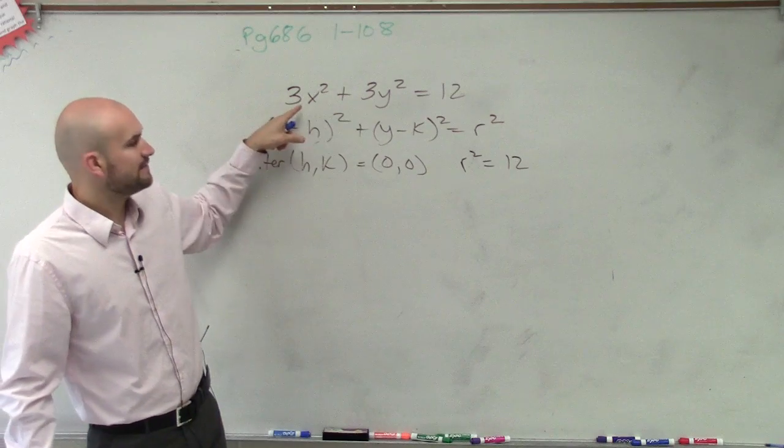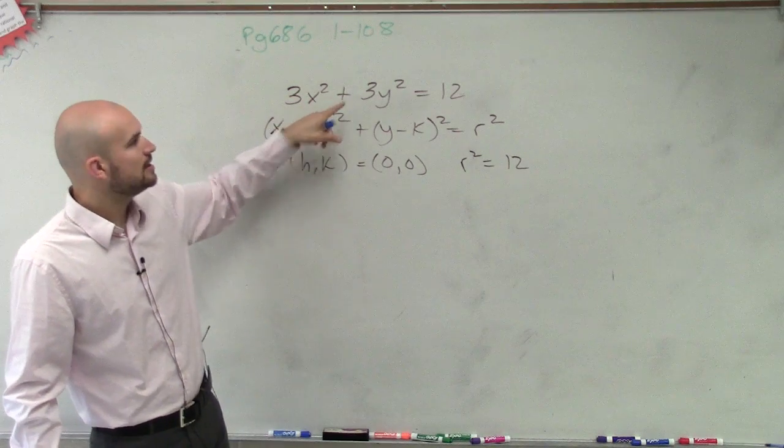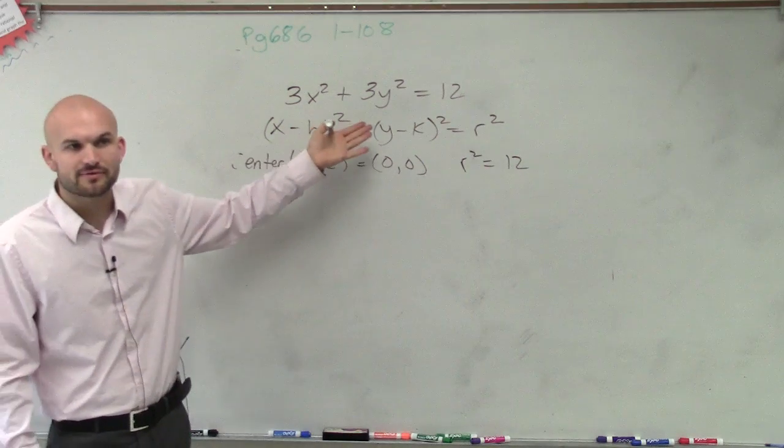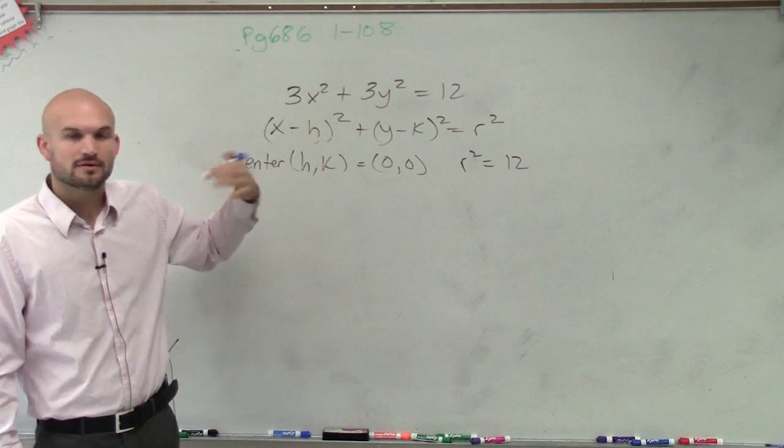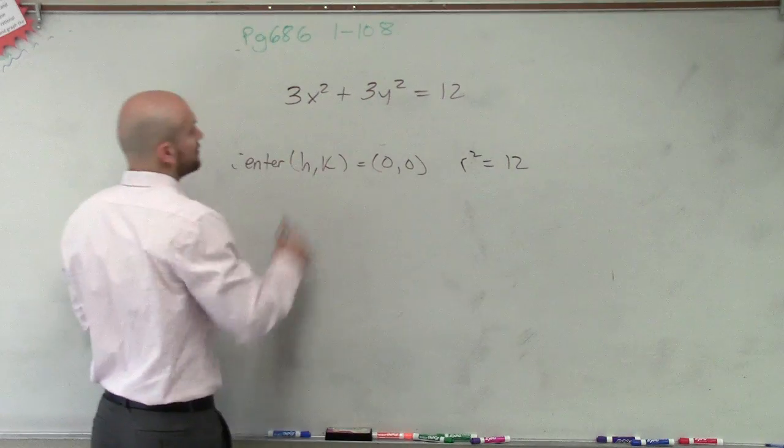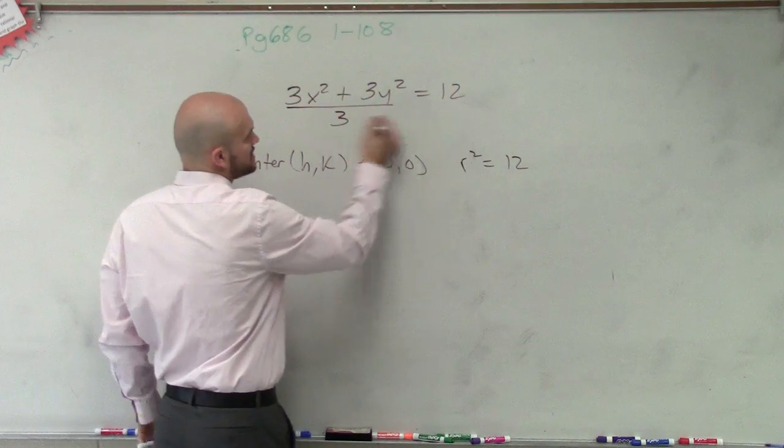So how can I get rid of this? I'm multiplying by 3x squared plus 3y squared equals 12. How can I get rid of being multiplied by 3 for both of these? I can divide by 3. So that's exactly what I'm going to do. I'll divide by 3 on both sides.